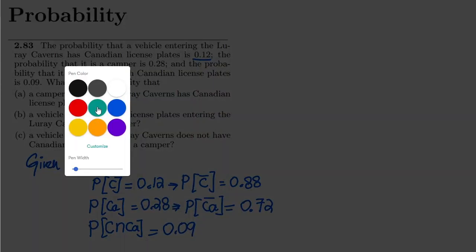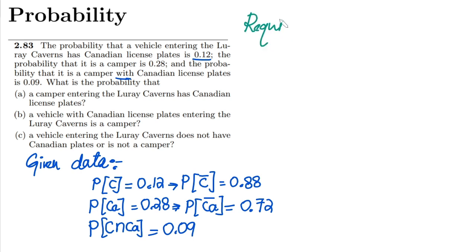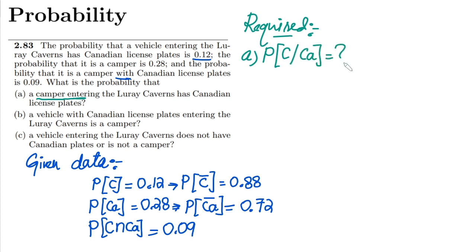Now let me write the required results. Part A: a camper entering Luray Caverns has Canadian license plates — given that it is a camper, we need to find the probability that the license plates are Canadian, i.e., P(C | CA). Part B: a vehicle with Canadian license plates entering Luray Caverns is a camper — given Canadian plates, find P(CA | C).